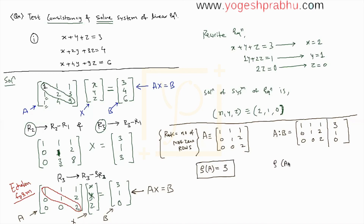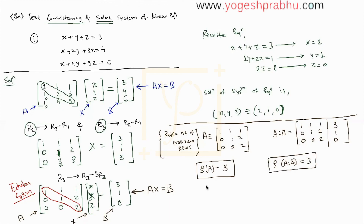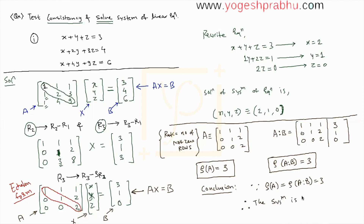Now we find the rank of the augmented matrix [A | b]. The rule is still the same — number of non-zero rows. The first row is non-zero, second row is non-zero, and the third row is also non-zero because of the value 2. So rank of [A | b] = 3 as well. The conclusion is: since rank of A equals rank of [A | b] equals 3, therefore the system is consistent.